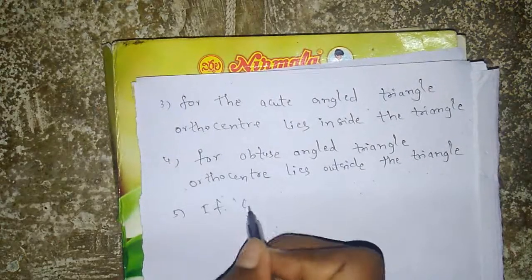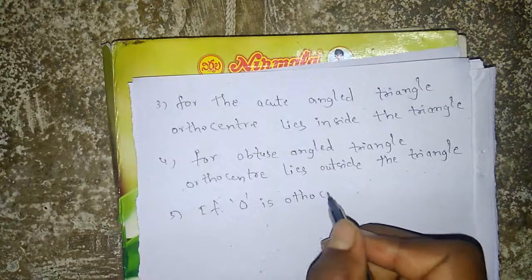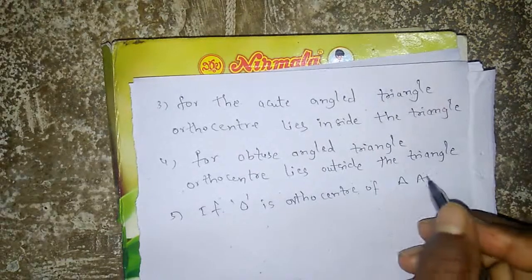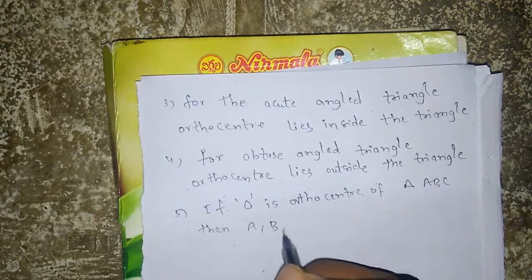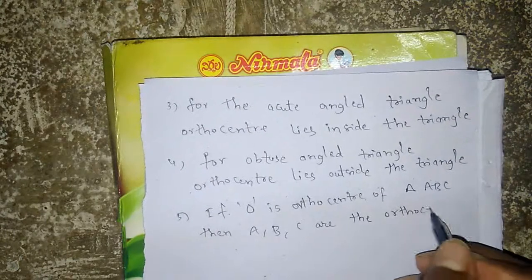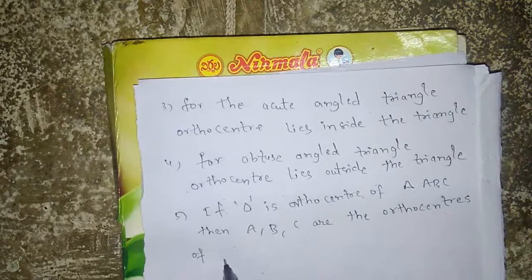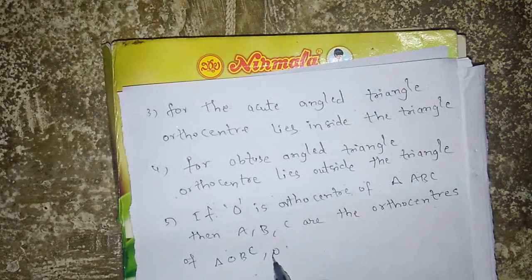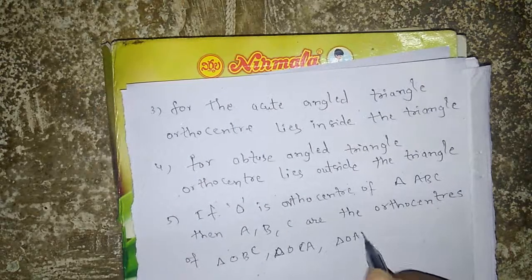Next point: if capital O is the orthocenter of triangle ABC, then A, B, C are the orthocenters of triangles OBC, OCA, and OAB respectively.